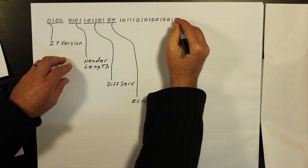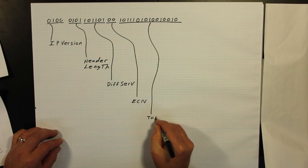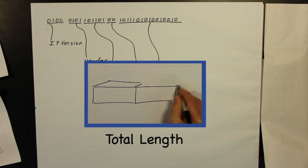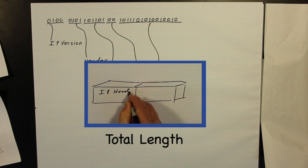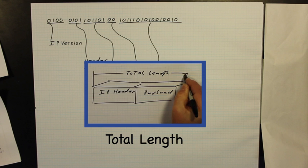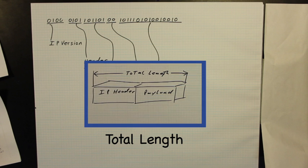Total length refers to the length of the entire packet, or datagram. This is in the form of 32-bit words, with a minimum of 20 and a maximum of 65,535 words.